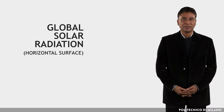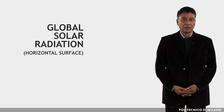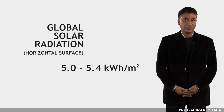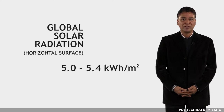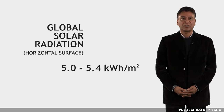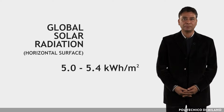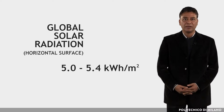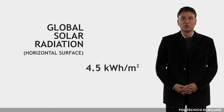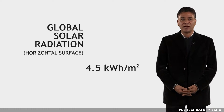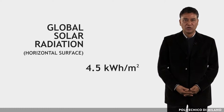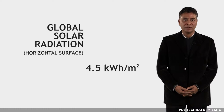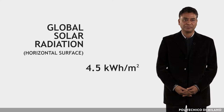The global solar radiation over the horizontal surface is 5 to 5.4 kWh per m² per day, and progressively lower to 4.5 kWh per m² moving away from the coastal line.